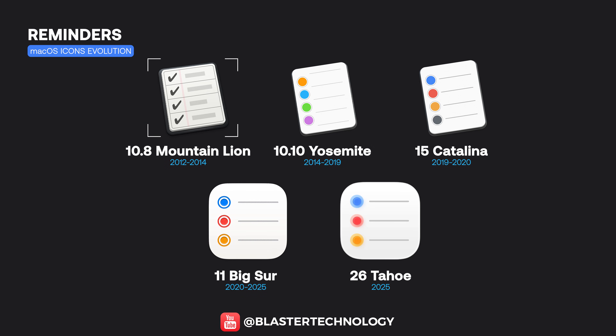The Reminders icon evolved from a realistic checklist with checkmarks to a simple symbol based on colored dots, introduced with the Yosemite release, and preserved and re-styled up to the present day.